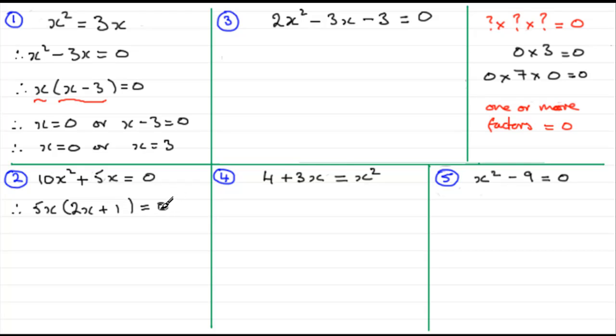Now I picked this example because what we've got here is three factors. We've got the 5 being multiplied by the x being multiplied by the 2x + 1. So that means one or more of these factors must equal zero. Well, it can't be the 5. 5 doesn't equal zero, so it must mean that this factor, x = 0, or the other factor, 2x + 1 = 0.